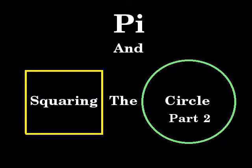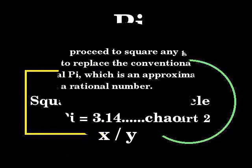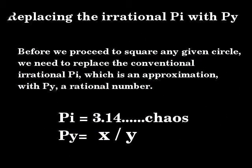Welcome to Pi and Squaring the Circle Part 2. Hopefully you have seen Part 1, which outlines the true value of Pi. I need to stress the importance of viewing this series of videos in numerical order, otherwise a person will lose my thread of reasoning. Before we proceed to square any given circle, we need to replace the conventional Pi, which is an irrational constant that can only give us approximations, with a rational Pi.